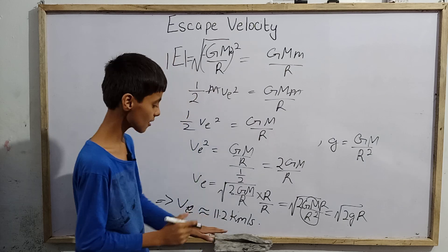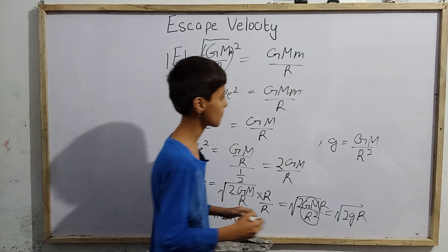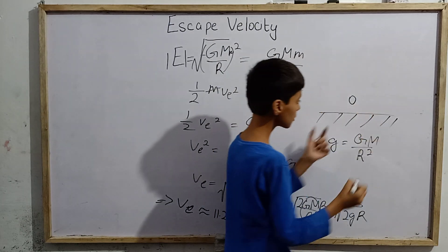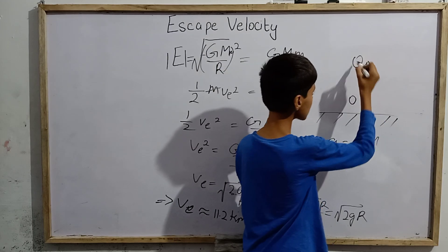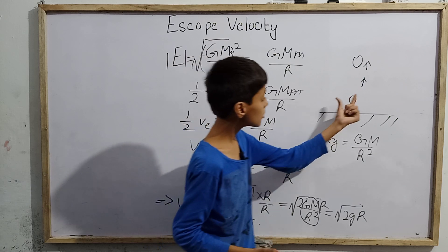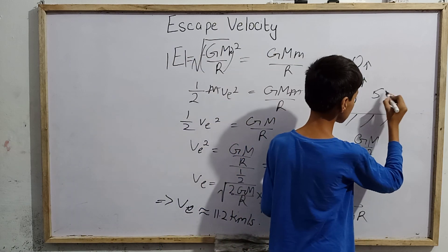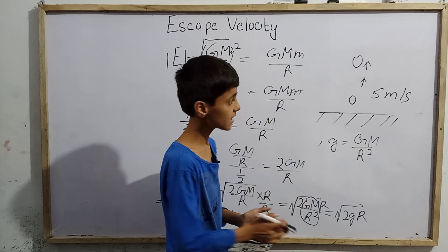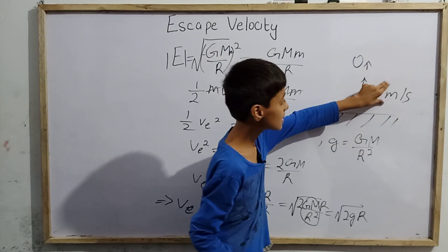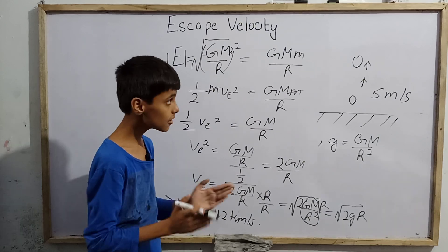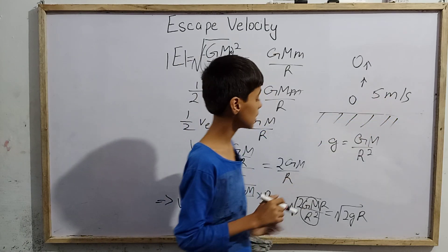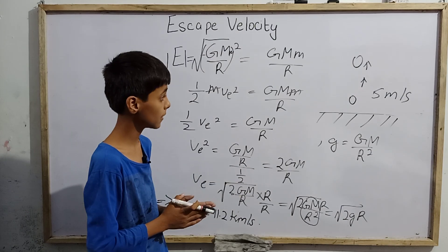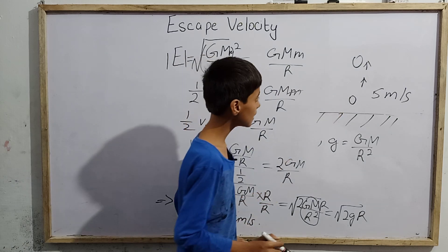For example, imagine this is the surface of Earth and a person is throwing a stone upward. If he throws the stone at five meters per second, it will go up to some height and then return back. Why? Because five meters per second is not equal to 11.2 kilometers per second. Converting 11.2 km/s to m/s gives a very high velocity, so five meters per second is a very low speed in comparison, and the stone returns.